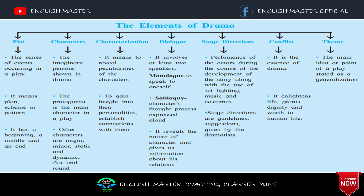Now let's see the elements of drama, starting with Plot. The exam question may be: what is plot? Plot is the series of events occurring in a play. Plot means plan, scheme, and pattern. Plot has a beginning, a middle, and an end.